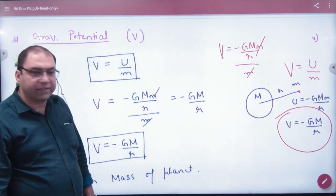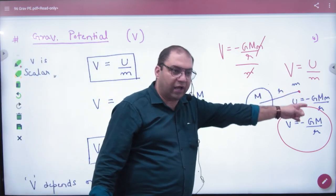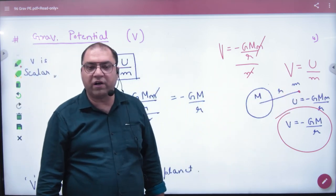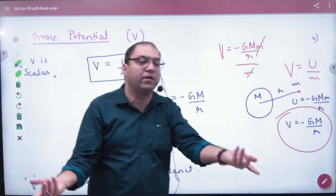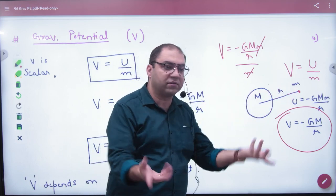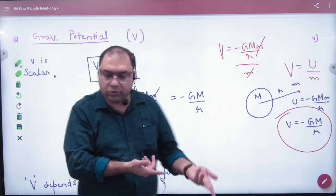To ek shortcut bana lete hai, same same problem hai, ki agar aapko yahan per potential nikalna hai, kisi point pe, to wahan per pehle mass lo, phir mass se divide karke, mass ko cut karo, phir koi si mass lo depend. Is potential ke formulae mein, mass role nahi play kar raha, planet role play kar raha hai.